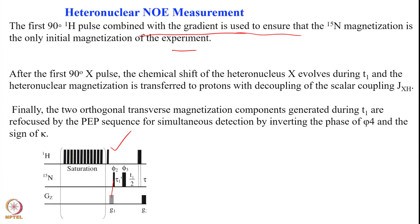After the first 90° pulse, the chemical shift of the heteronucleus N15 evolves during the T1 period. Then we transfer the magnetization back to the proton for detection. We decouple so that it does not evolve under coupling during this period, and there is a 180° pulse here.